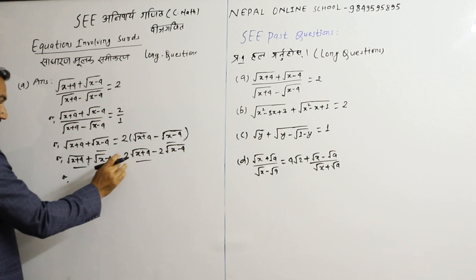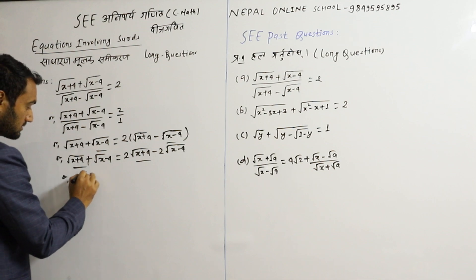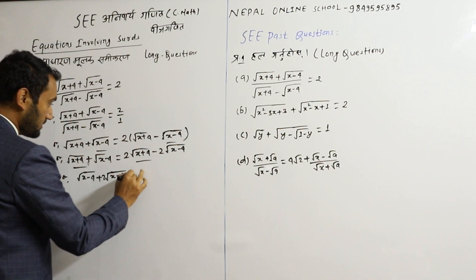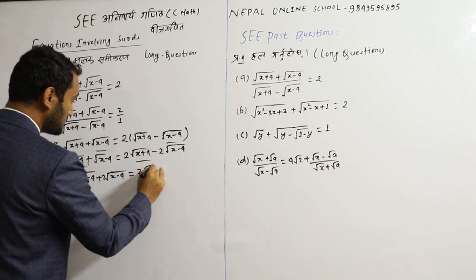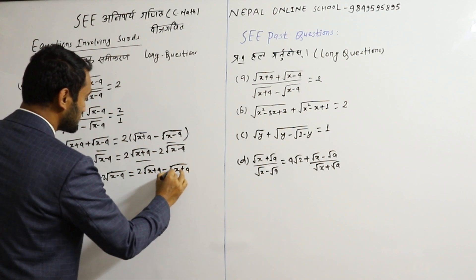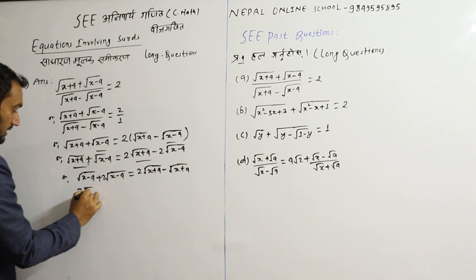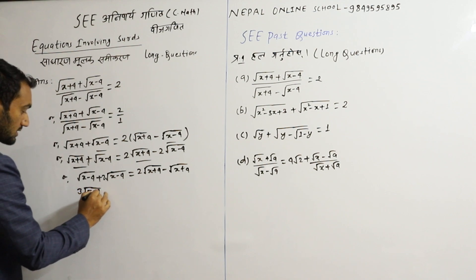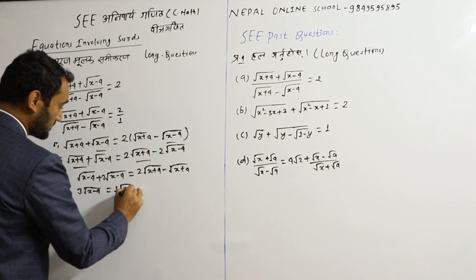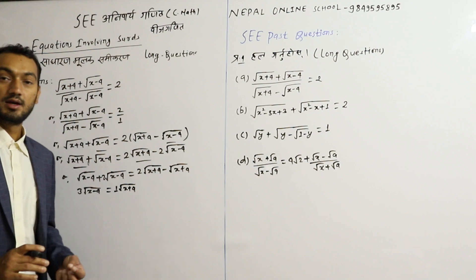So root(x + 4): this is negative root(x − 4) plus 2·root(x − 4) equal to 2·root(x + 4) minus root(x + 4). This gives 3·root(x − 4), and this is 2 minus 1 for root(x + 4).